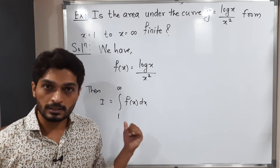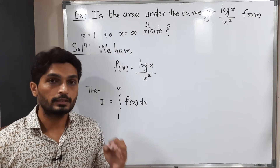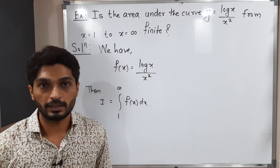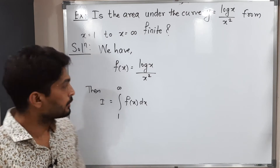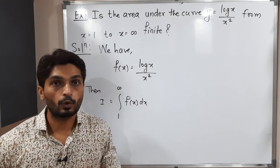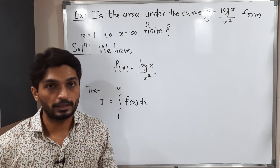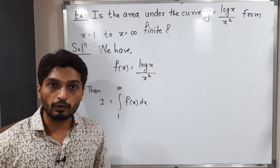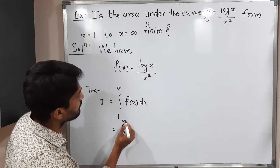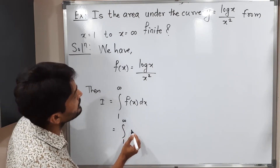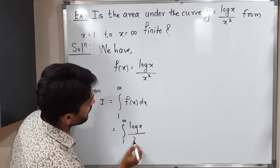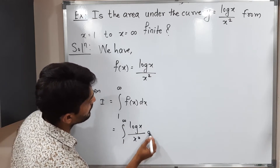We have to check whether the value of this integration is finite or infinite — that is, whether this improper integral is convergent or divergent. Since the upper limit is infinity, we call it an improper integral. Let us put the value of f(x): the integral from 1 to infinity of log(x) / x² dx.